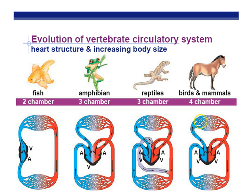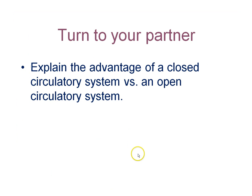Blood is not actually blue — it's purplish-red when oxygen-poor and bright red when oxygen-rich. It's colored blue in diagrams to make it easier to distinguish. Blood may look blue through the skin, but that's the skin affecting the color — out of the tubes, oxygen-poor blood would look purplish-red. Turn to your partner and explain the advantages of a closed versus open circulatory system.